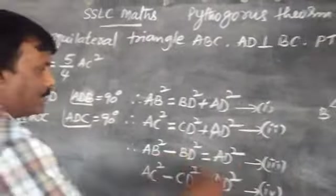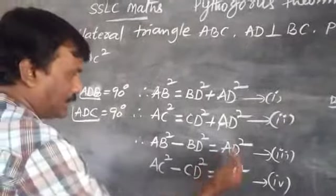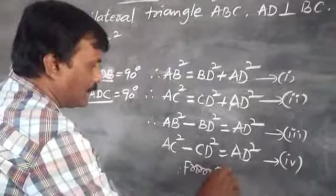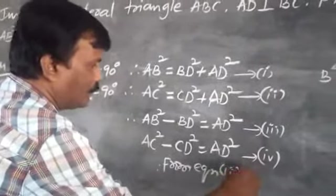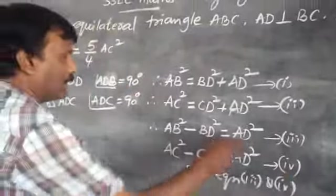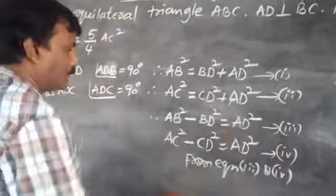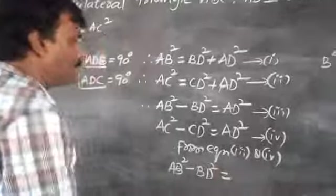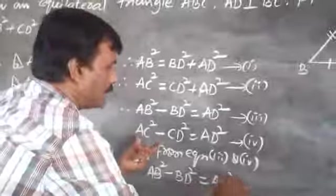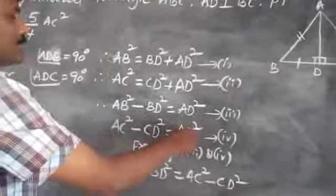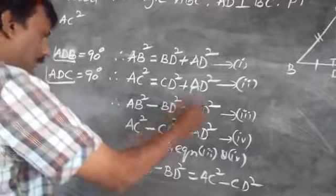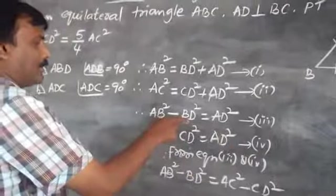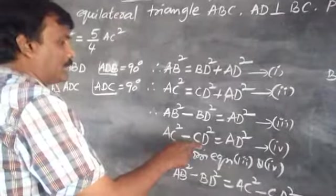AD square is equal to AD square. Therefore, from equations 3 and 4, we equate: AB square minus BD square is equal to AC square minus CD square.